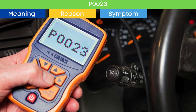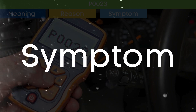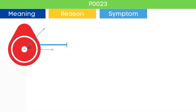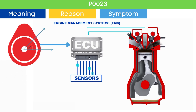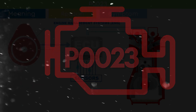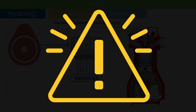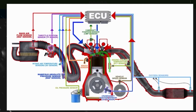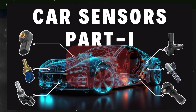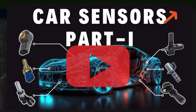Now that we know what the P1023 OBD-2 code is, let's dive into its symptoms. Cam angle is a very crucial parameter in engine management systems to optimize engine performance. The ECU also relies on other EMS sensor inputs. To learn more about sensors of the engine management system, check our detailed video on car EMS sensors.